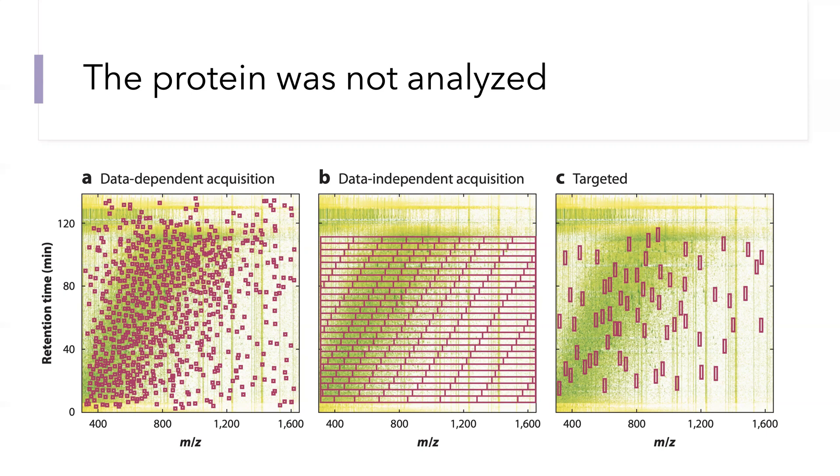This is also the case with targeted analysis. With DIA acquisition, that subset is much larger—it encompasses all of the ions within certain retention time and m over z set of windows, but again there can be many ions that are not being analyzed even in that case. What is important to realize is that the probability of an ion to be analyzed depends very strongly on its abundance, particularly in the case of data dependent acquisition.